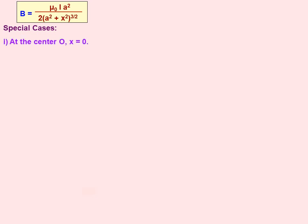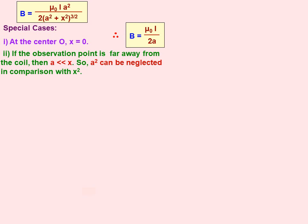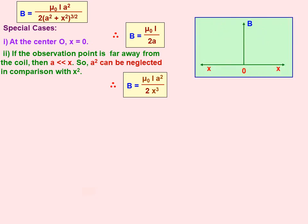From the expression B = µ₀·I·a² / [2·(a²+x²)^(3/2)], we can see some special cases. When point P is at the center O, x = 0, so the distance is zero. Putting x = 0 in the equation, the term with x eliminates, giving B = µ₀·I·a² / (2·a³) = µ₀·I / (2a).